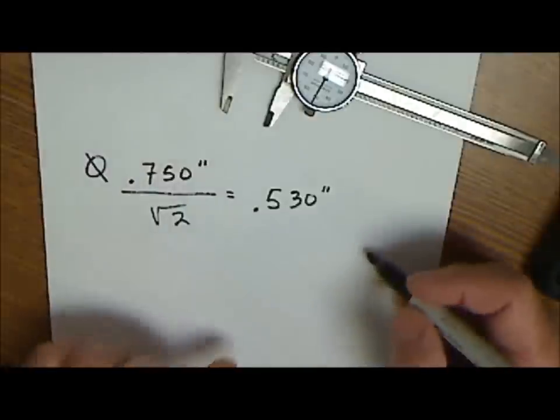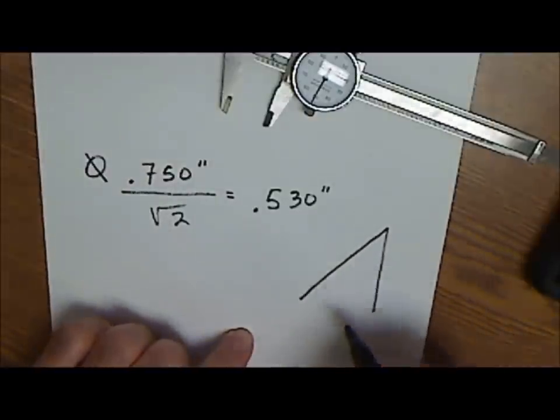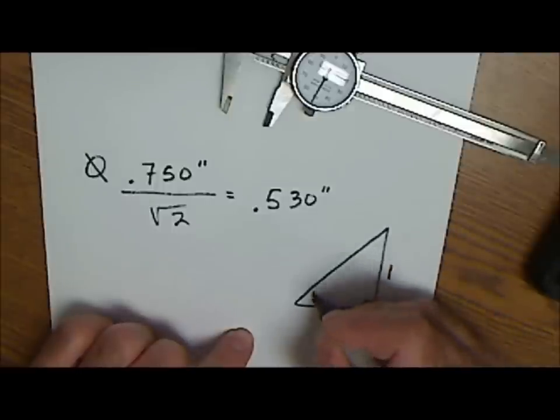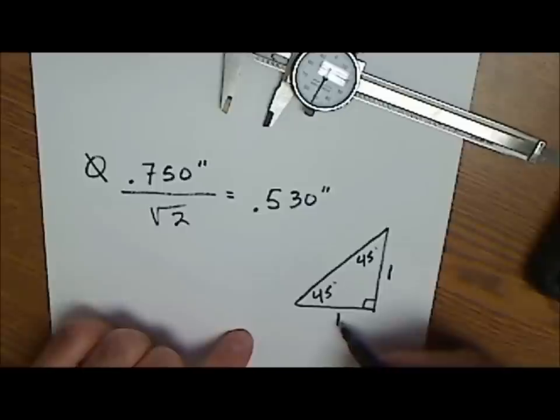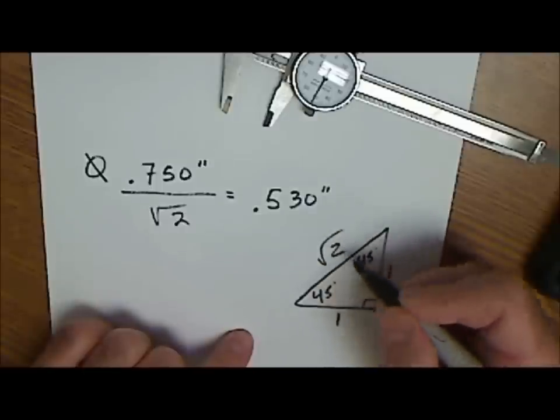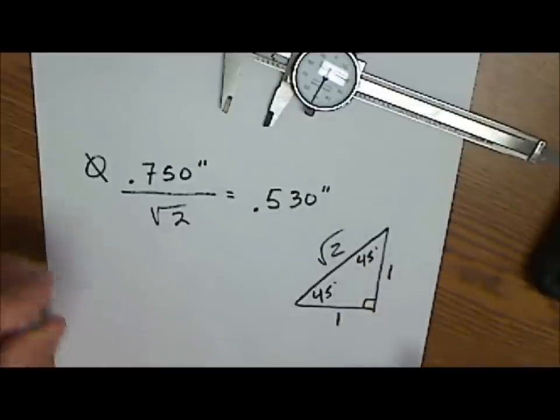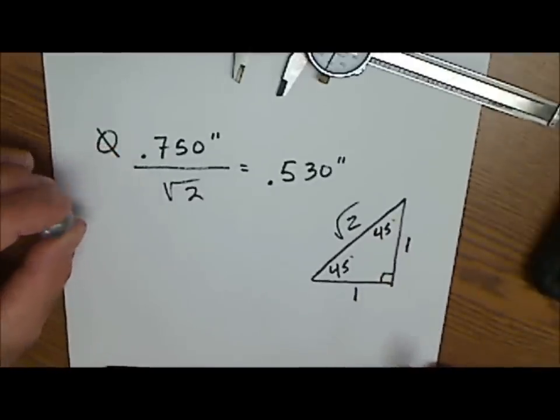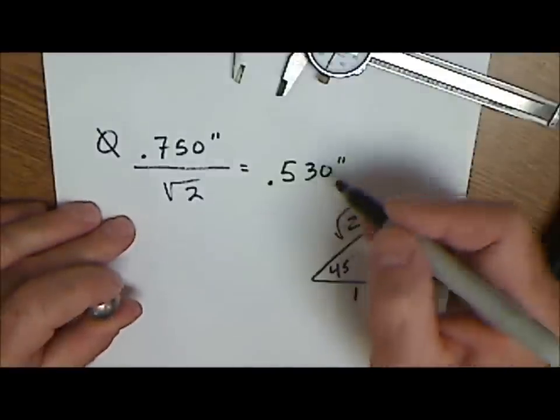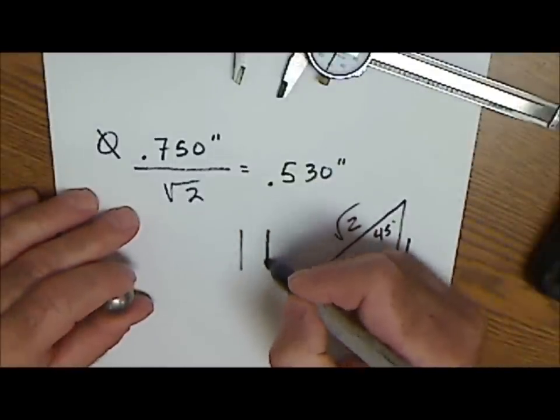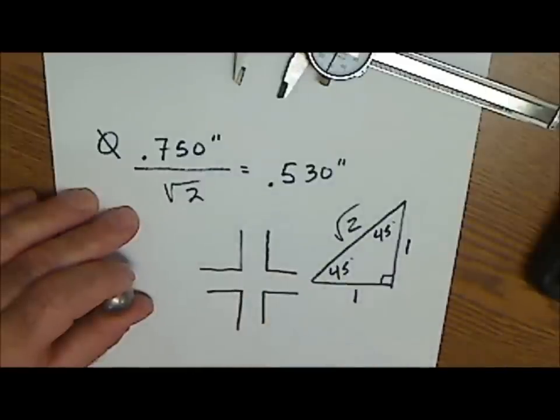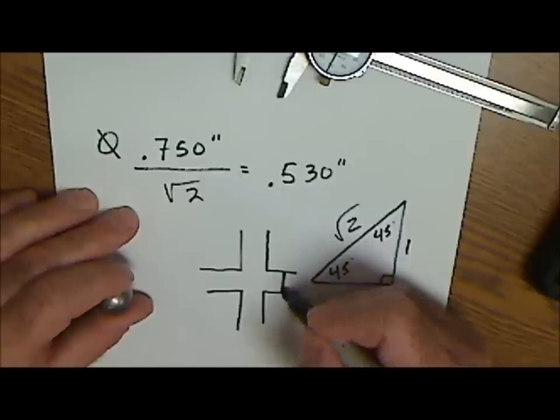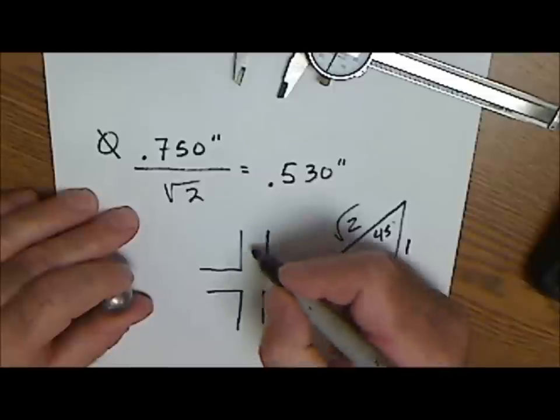So I could actually drill this hole 530 thousandths of an inch and the ball bearing will fit inside of that, and it's because of our famous isosceles right triangle here. Isosceles means these two legs are congruent, so the angles opposite them are congruent. And then if I use Pythagorean theorem, where I know that one squared plus one squared is root two squared, so it's always an isosceles ratio in an isosceles right triangle.